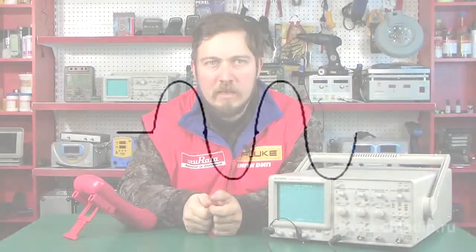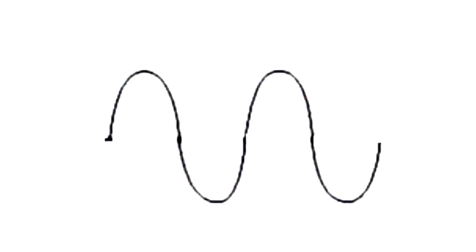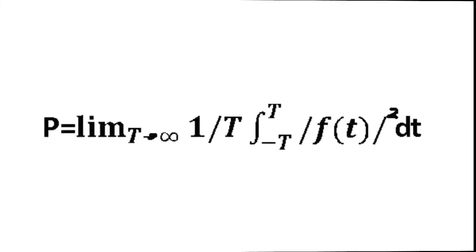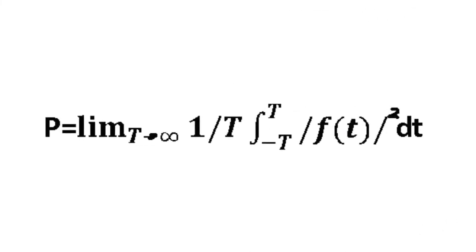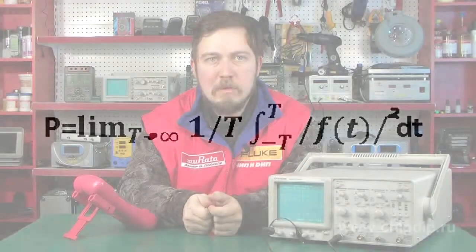Deterministic signals are signals whose value is zero till the time moment t equals zero. Power signals have a finite value of normalized power p. The signal normalized power is determined by the formula. Normalized energy is determined in a way similar to normalized power.